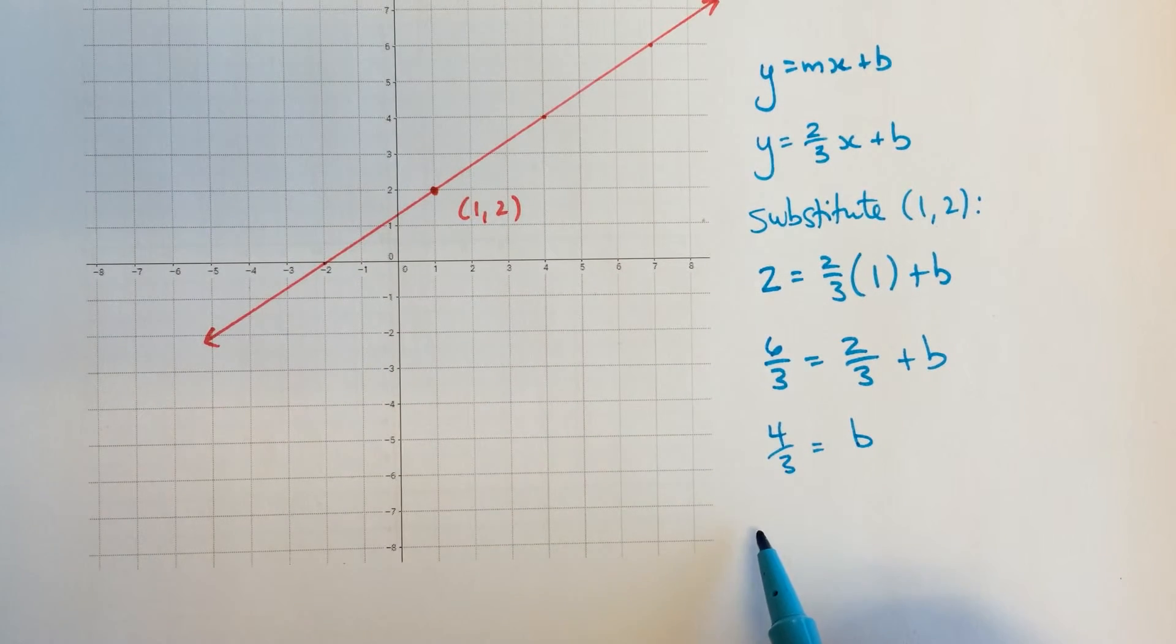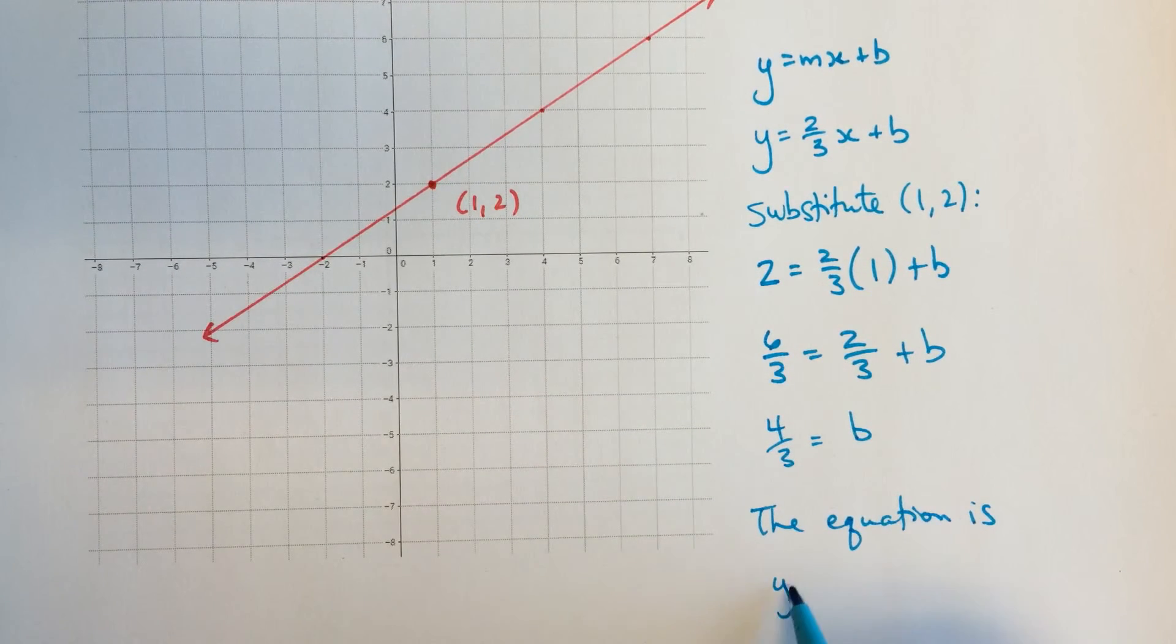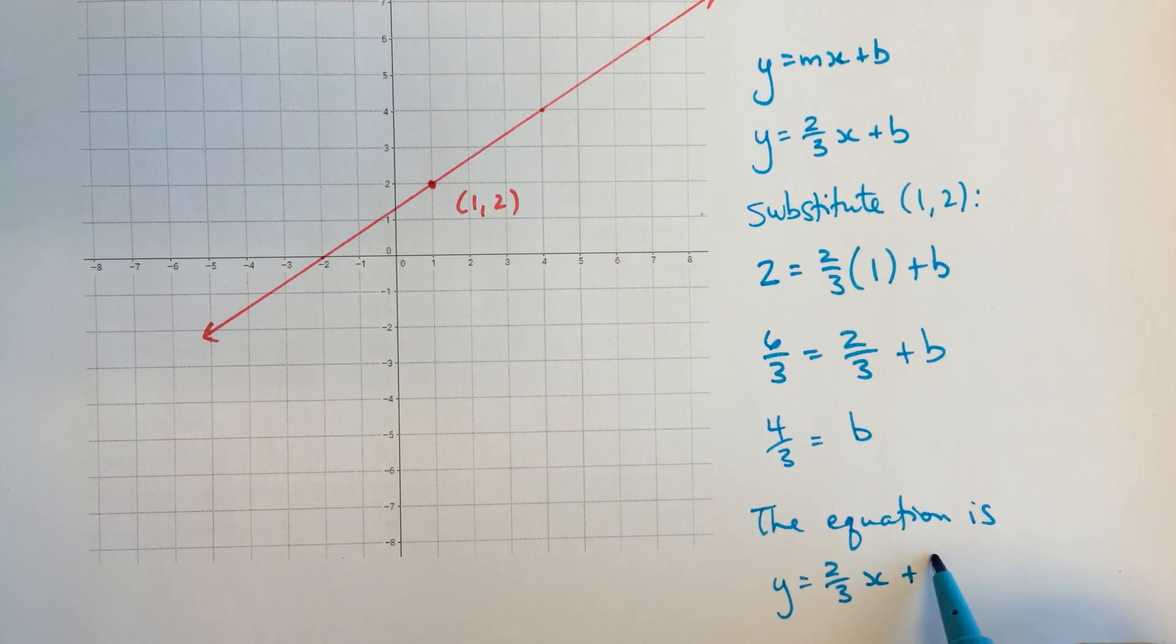And so the equation is y equals two-thirds x plus four-thirds.